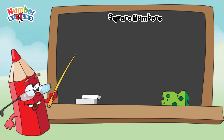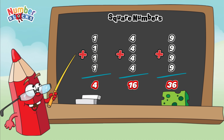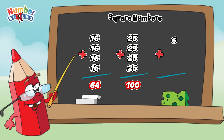Now, join me and let's add them. 1 plus 1 plus 1 plus 1 is equals to 4. 4 plus 4 plus 4 plus 4 is equals to 16. 9 plus 9 plus 9 plus 9 is equals to 36. 16 plus 16 plus 16 plus 16 is equals to 64. 25 plus 25 plus 25 plus 25 is equals to 100. 36 plus 36 plus 36 plus 36 is equals to 144.